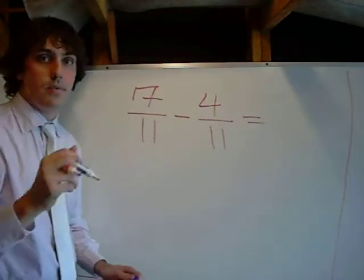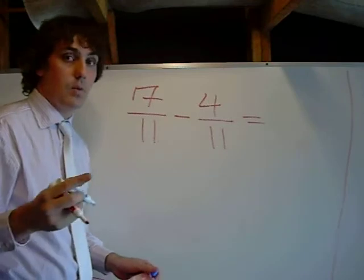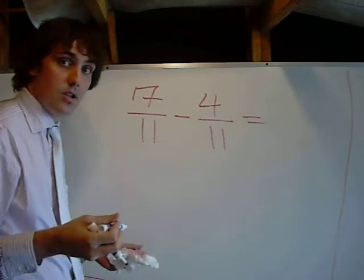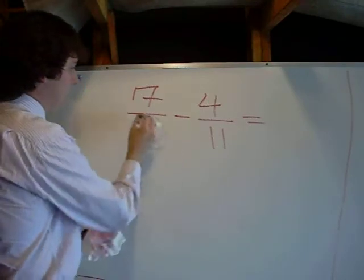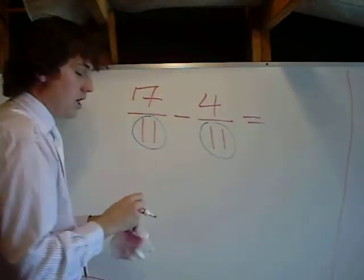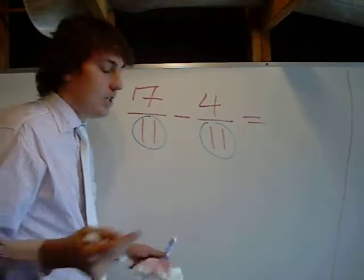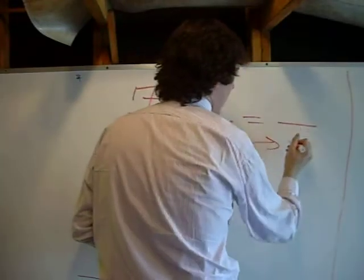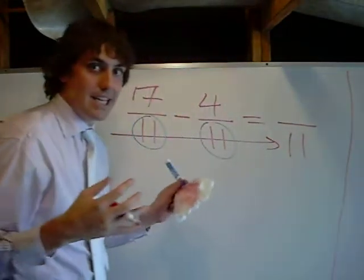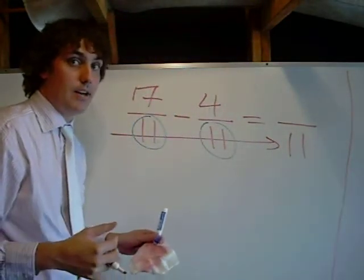So this is a subtraction problem. First thing we've got to do again, we've got to check the denominators. Make sure they're the same. What do we have? We have 11, we have 11 here. 11 is the same as 11, so we're just going to go, and on our answer, we're going to put down 11, because it's the same denominator. Cool?